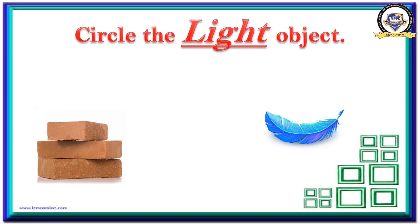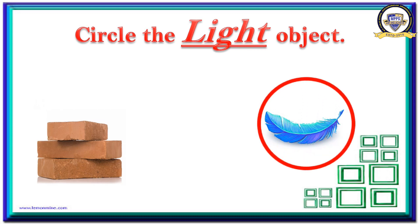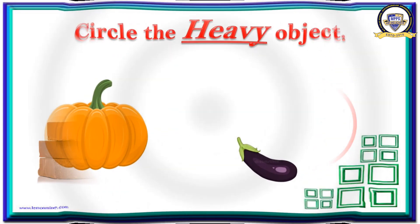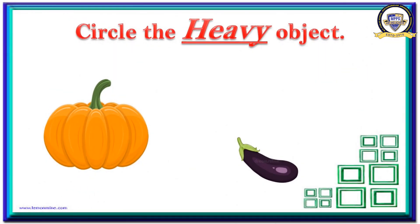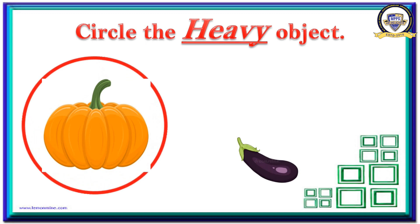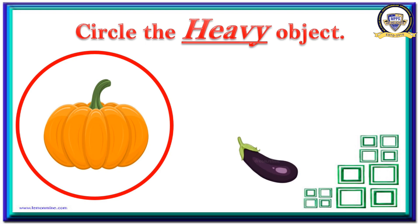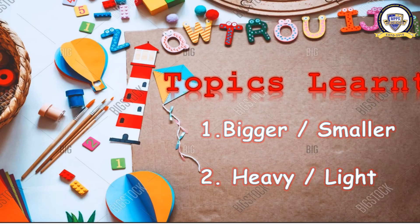Next question: bricks or feather — which is light? You have to mark the light one. Yes, it is feather! Feather is very light, and bricks are very heavy. Next one: pumpkin and brinjal — which is heavy? You have to circle the heavy one. Pumpkin! Very good, and brinjal is the lighter one. You have understood!